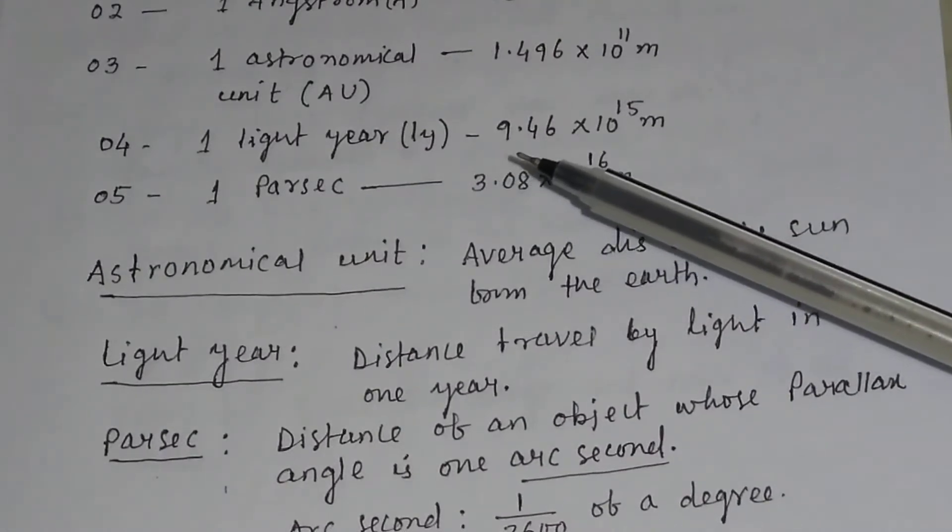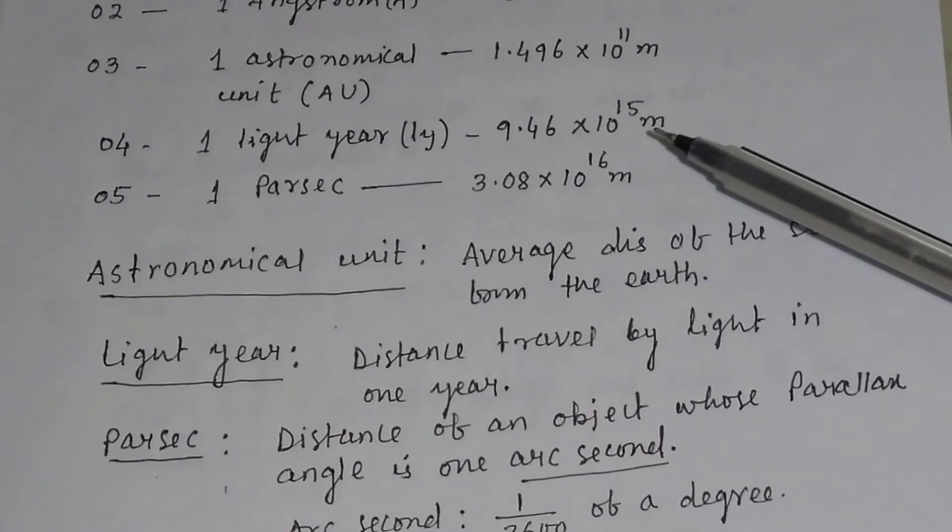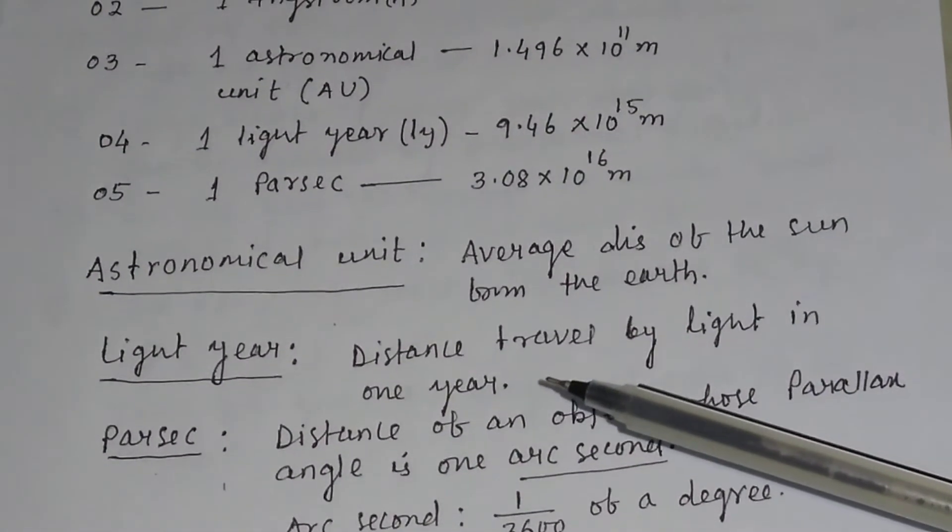Similarly, one light year is equal to 9.46 into 10 to the power 15 meter. Light year means the distance traveled by light in one year.